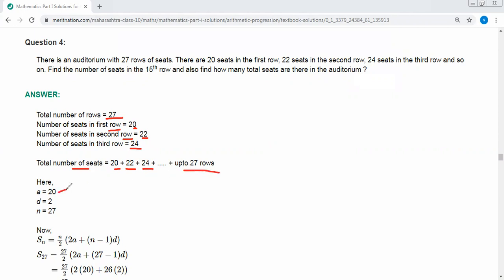Here, value of a, the first term, is 20. Common difference d is 2. That is 22 minus 20 equals 2. This is the common difference. And n value is 27.